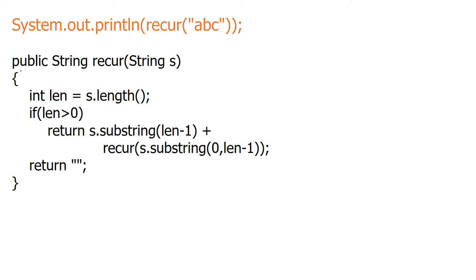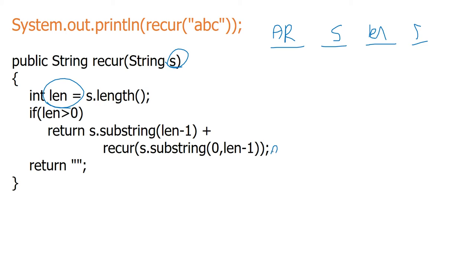Now, strings. What should we keep track of this time? We have s and we have len. So we'll track: AR, s, len, and r (our return). On the first AR column, s is going to be 'abc'. The length, len equals s.length(), which is 3. Now if the length is greater than 0 — which it is — return s.substring(len - 1) plus recur(s.substring(0, len - 1)).